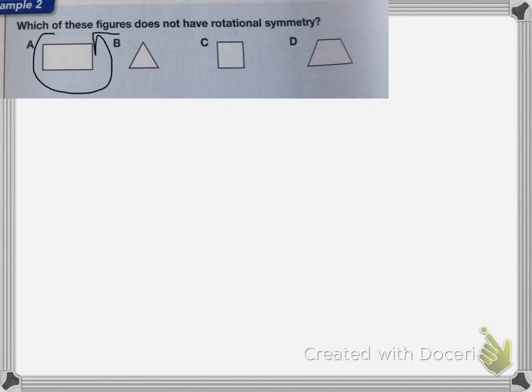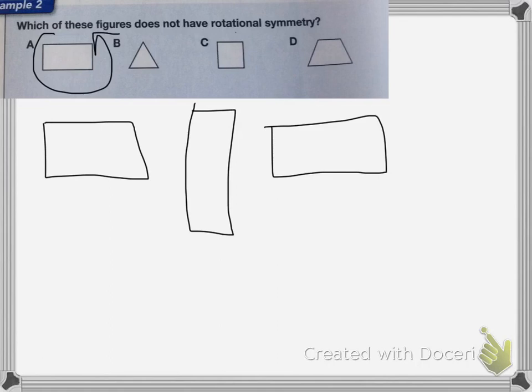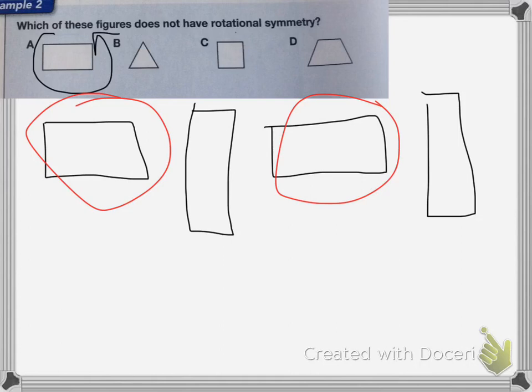So I rotate the rectangle. It looks the same if I rotate it 180 degrees, because this is how it starts. If I rotate it 90 degrees, it looks like this, 180 degrees looks like this, and then 270 degrees looks like this. So these two rotations look the same, so A does have rotational symmetry. C is a square, so it obviously does.